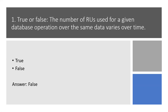RU stands for Request Unit. Azure Cosmos Database measures throughput using something called a Request Unit. Request Unit usage is measured per second, so the unit of measure is Request Units per second. You must reserve the number of RUs you want Azure Cosmos Database to provision in advance, so it can handle the load you have estimated, and you can scale your RUs up or down at any time to meet current demand.